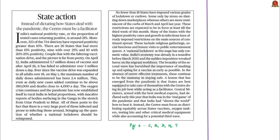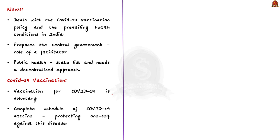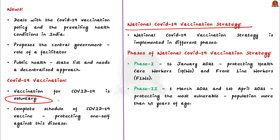The next news article deals with COVID-19 vaccination policy and prevailing health conditions in India. Vaccination for COVID-19 in India is voluntary, though it is advisable to receive the complete schedule for protection. India's national COVID-19 vaccine strategy is based on scientific and epidemiological evidence, focusing on systematic end-to-end planning in close collaboration between the union government and state governments. The vaccine strategy has been rolled out in phases. Phase one was launched on January 16th, 2021, focusing on protecting healthcare workers and frontline workers. Phase two focused on protecting the most vulnerable — population aged 45 years and above, who accounted for about 80% of COVID mortality at that time.